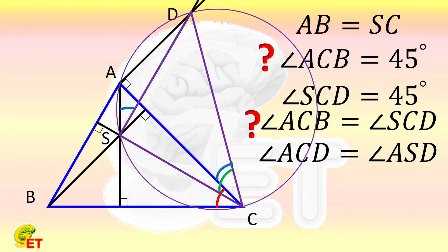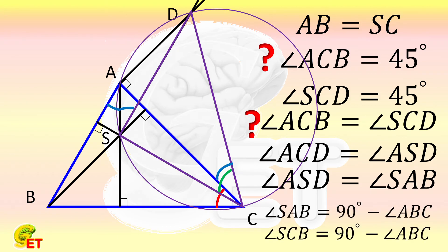Getting back to the point that SD and AB are parallel, we obtain that angle ASD is equal to angle SAB. The angles SAB and SCB are both complementary to angle ABC, so they are also equal.